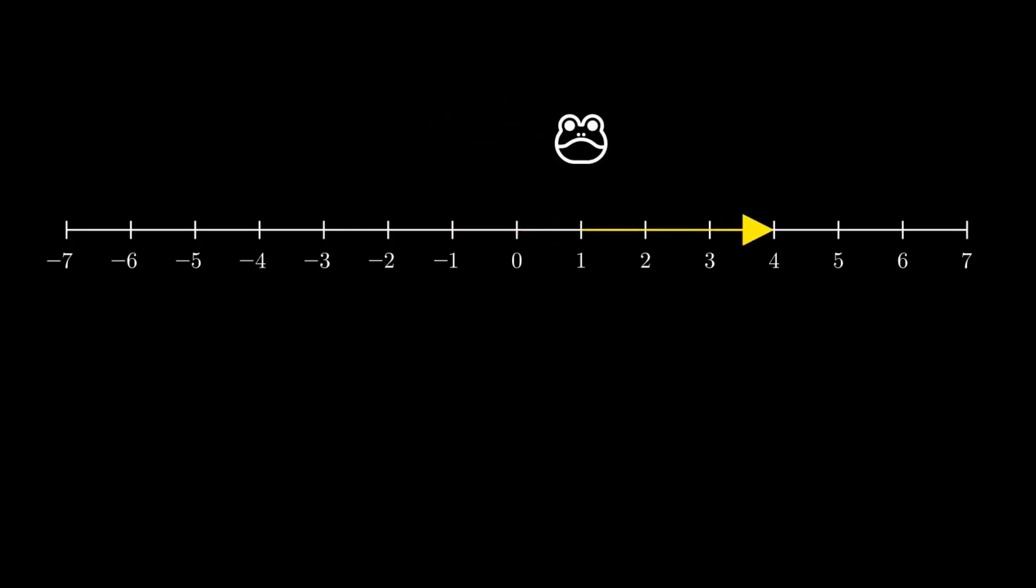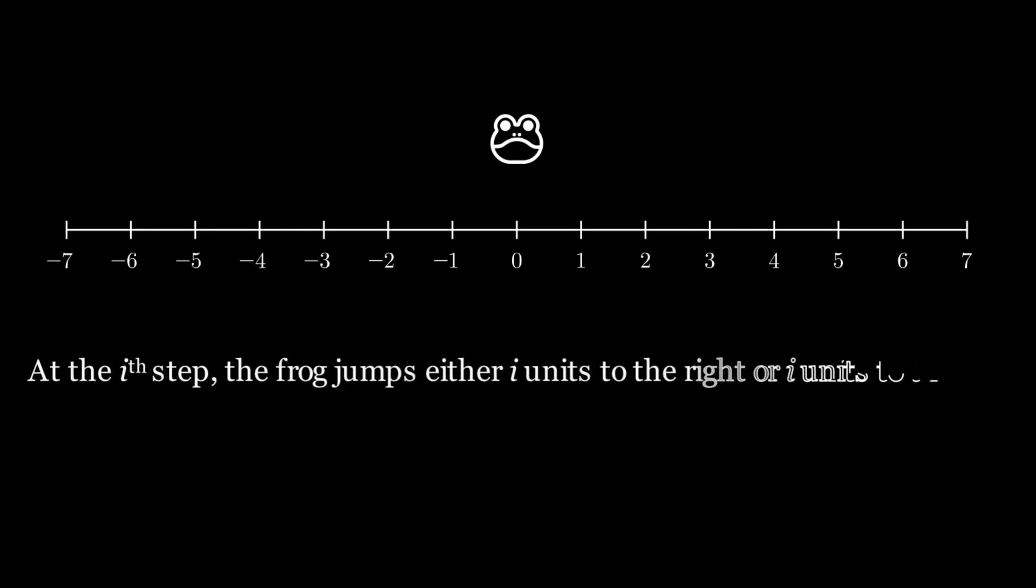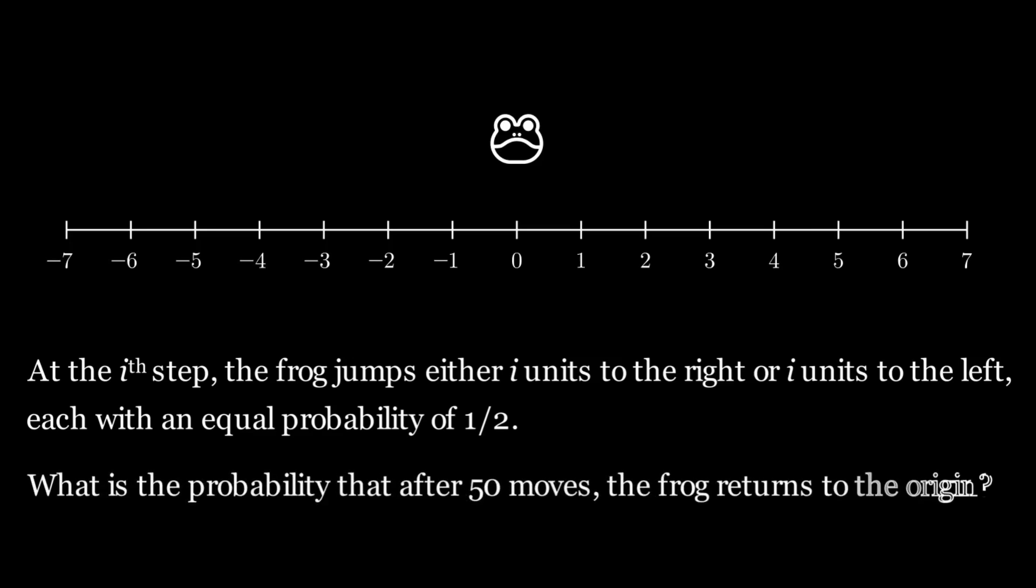Similarly, on the third step, it can jump three units, and so on. So at the ith step, the frog jumps either i units to the right or i units to the left, each with an equal probability of half. What is the probability that after 50 moves, the frog returns to the origin? Pause the video here if you want to give it a try.